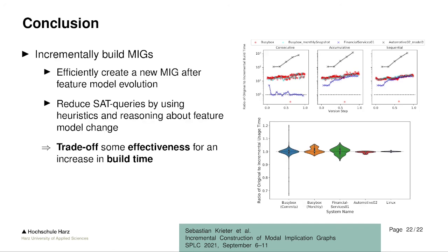To conclude, our results show that we are able to efficiently create a new MIG after a feature model change occurs, either by reducing sub-queries via heuristics or by skipping expensive operations entirely. We trade off some completeness of our graph, which affects effectiveness in decision propagation, but as shown, it is not affected by much. We can therefore recommend using an incrementally built or incomplete MIG in decision propagation.